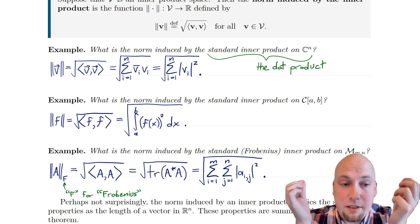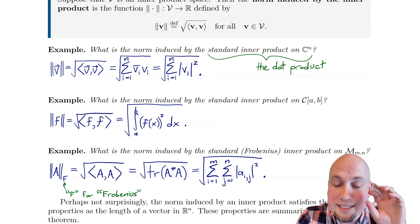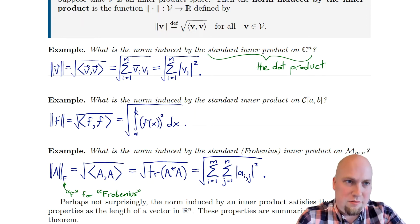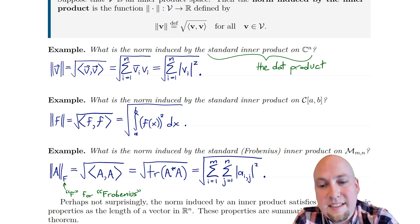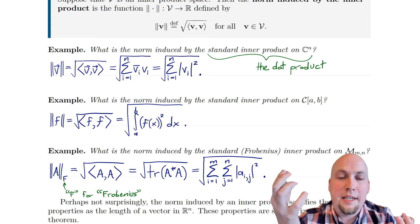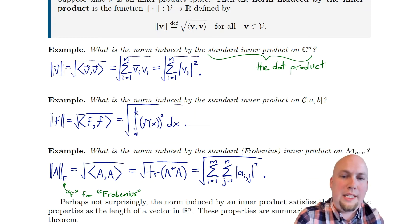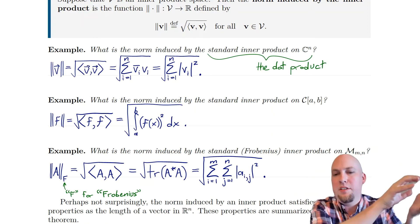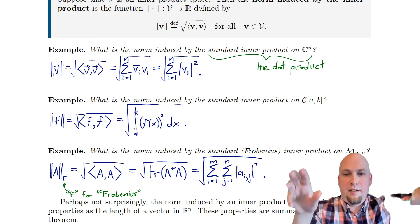What is the norm induced by this standard inner product? All you do is take the inner product of the function with itself and then square root at the end of the day. Usually it's f(x) times g(x), but here g equals f, so you get f(x) times itself — f(x) all squared. So this is the square root of the integral of f(x) squared. You can think of the squaring as negating the fact that the function might go below the x-axis, so things don't cancel when you integrate. This really measures how far f is from zero on the entirety of the interval from a to b.